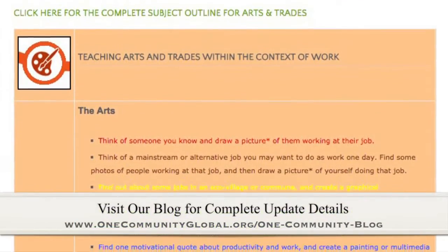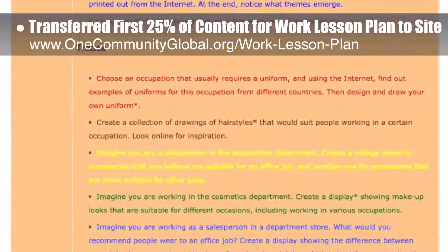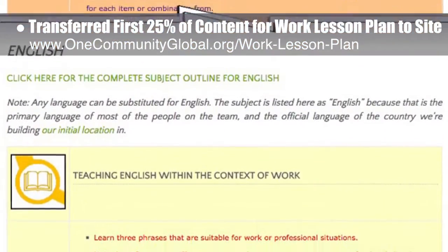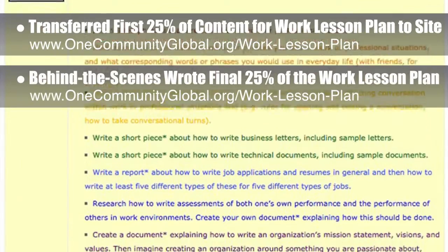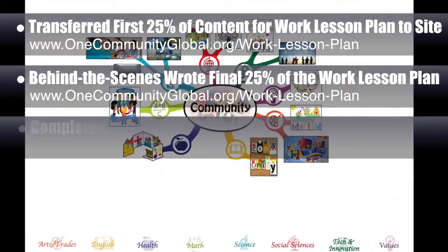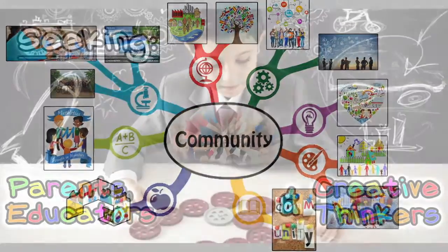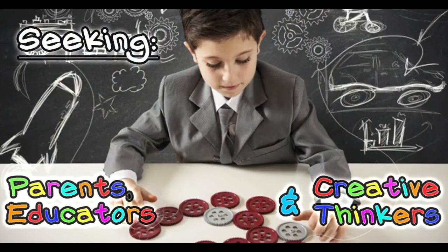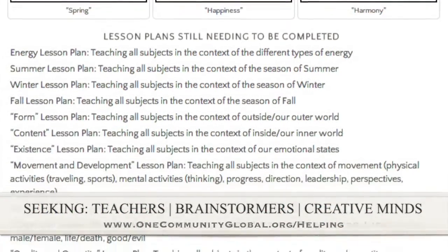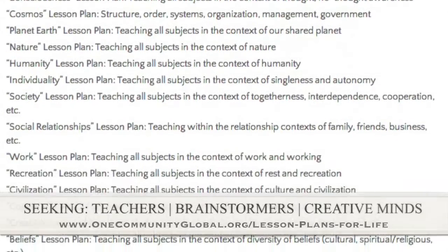This week the core team transferred the first 25% of the written content for the work lesson plan to the website. This lesson plan is purposed to teach all subjects to all learning levels in any learning environment using the central theme of work. Behind the scenes, we wrote the final 25% of the written part of this same lesson plan, bringing it to 100% complete. We also completed the first 25% of the mind map for the community lesson plan and added icons to the community lesson plan webpage. We are seeking people to finish these lesson plans.